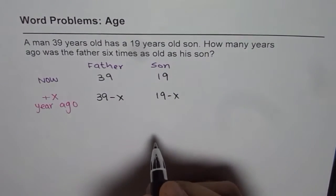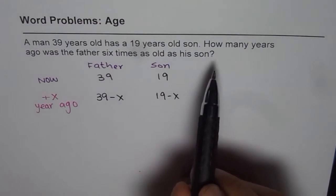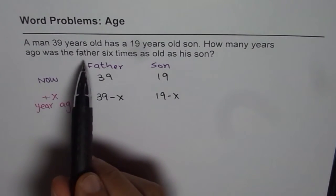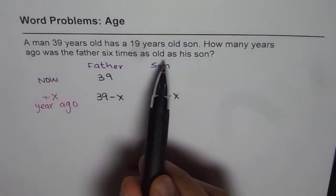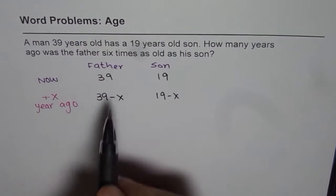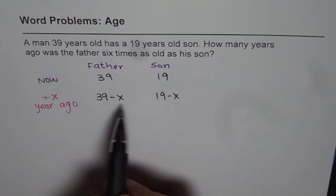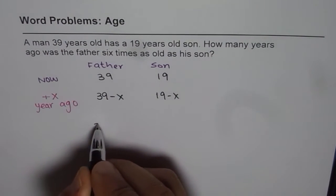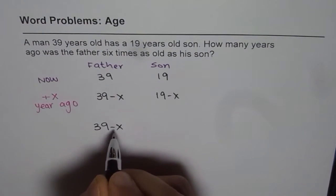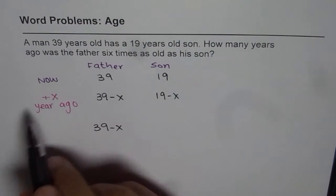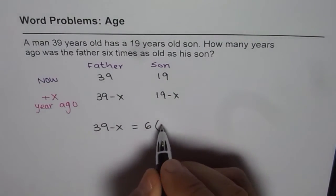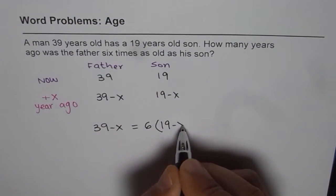Now the question says, how many years ago was father 6 times as old as his son? So how many years ago was father 6 times son? That gives us the equation. And the equation is 39 minus x is the age x years ago, should have been 6 times age of son, 19 minus x.